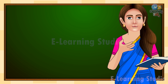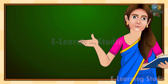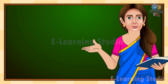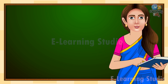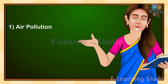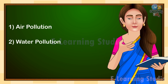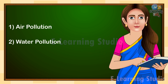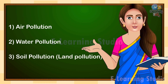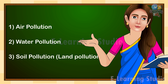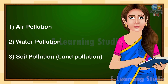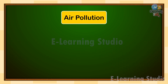Children, there are mainly three kinds of pollution: 1. Air Pollution, 2. Water Pollution, 3. Soil Pollution. Let us discuss about air pollution.